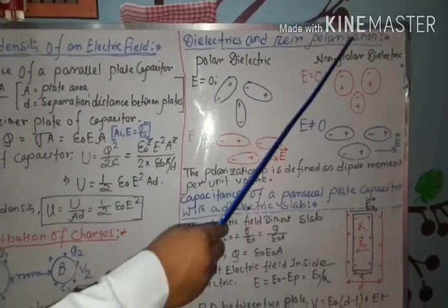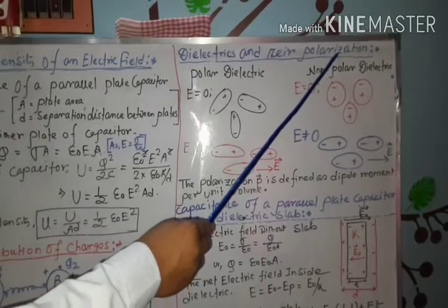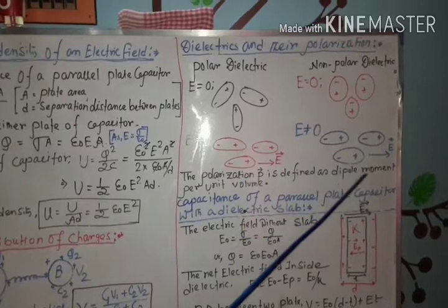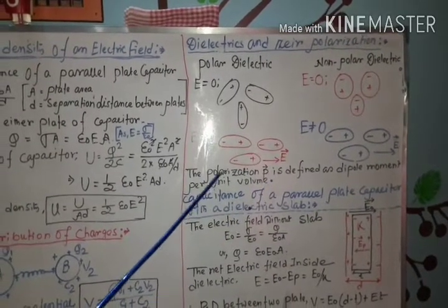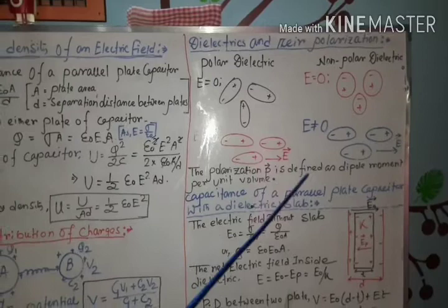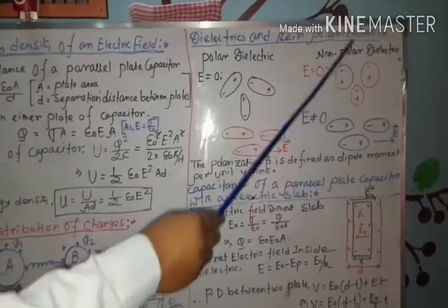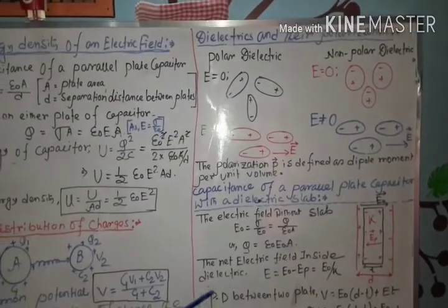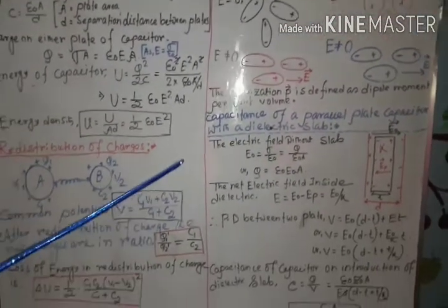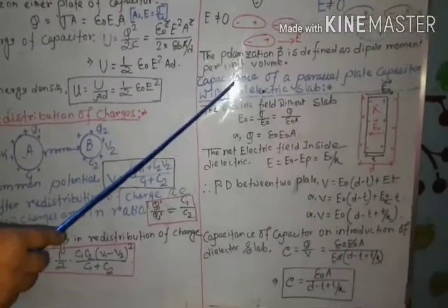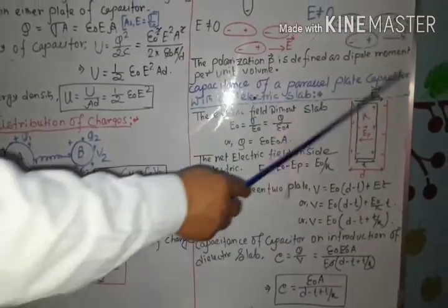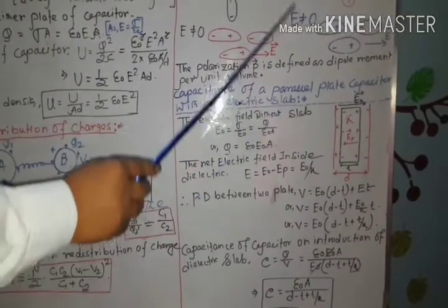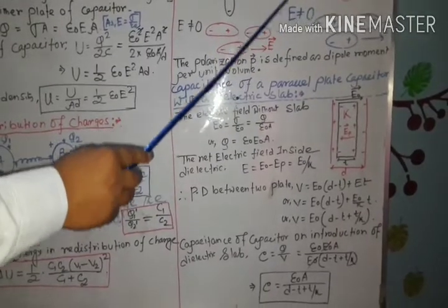How can you measure this polarization? Polarization is the measurement of dipole moment per unit volume. That is the way by which you can determine the polarization. In this chapter, our last topic is to determine the capacitance of a parallel plate capacitor with a dielectric slab, and that's why we read about the dielectric material.